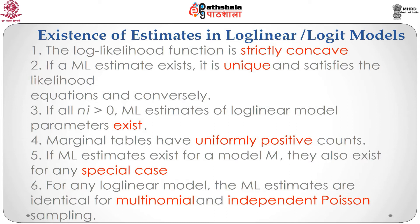If all n_i are greater than zero, ML estimates of log-linear model parameters exist. If ML parameter estimates exist for a log-linear model that equates observed and fitted counts in certain marginal tables, then those marginal tables have uniformly positive counts. If ML estimates exist for a model M, they also exist for any special case of M. For any log-linear model, the ML estimates mu-hat are identical for multinomial and independent Poisson sampling, and those estimates exist in the same situations.